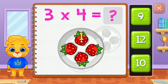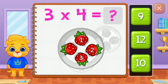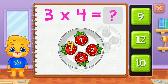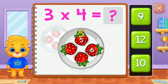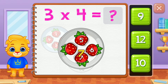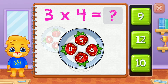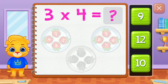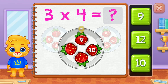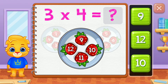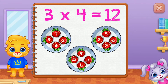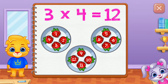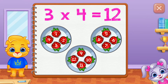1, 2, 3, 4, 5, 6, 7, 8, 9, 10, 11, 12. 3 groups of 4 equals 12.